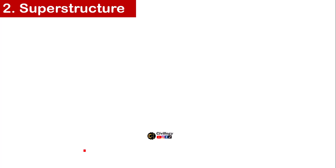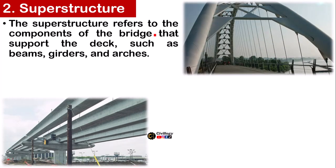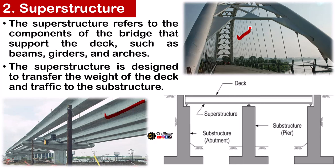Second, we have the Superstructure. The superstructure is basically the part of a bridge comprising a few important components. It refers to the components that support the deck, such as beams, girders, and arches. The superstructure is designed to transfer the weight of the deck and traffic to the substructure. This includes the girders, deck, and in some cases arches, which are all part of the superstructure.